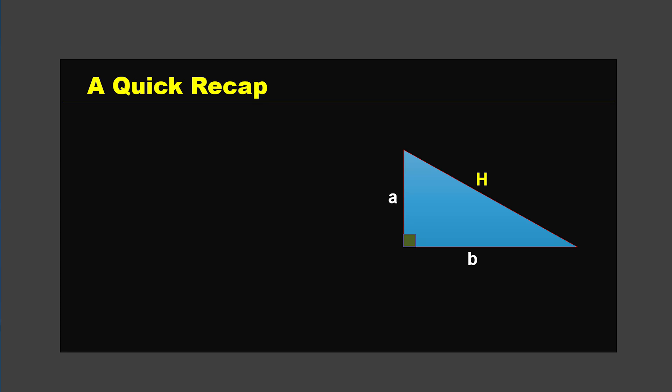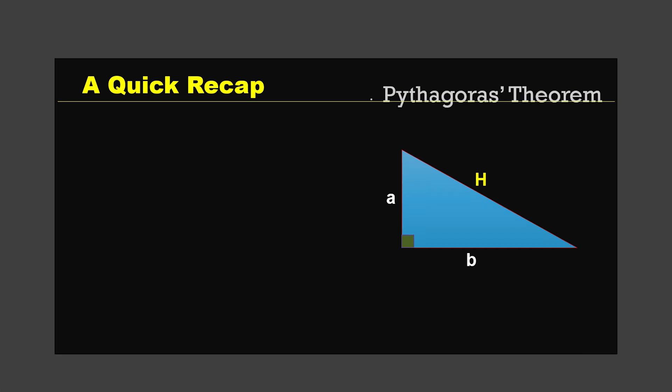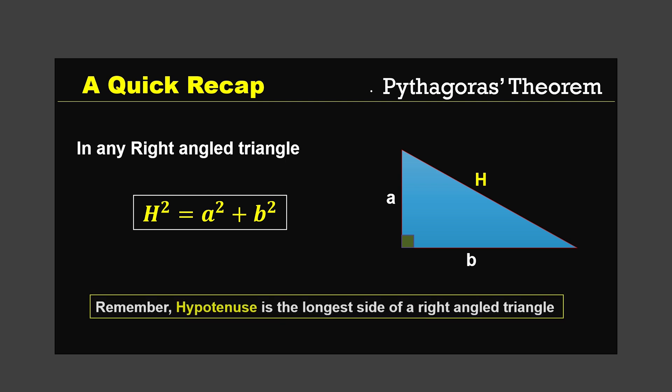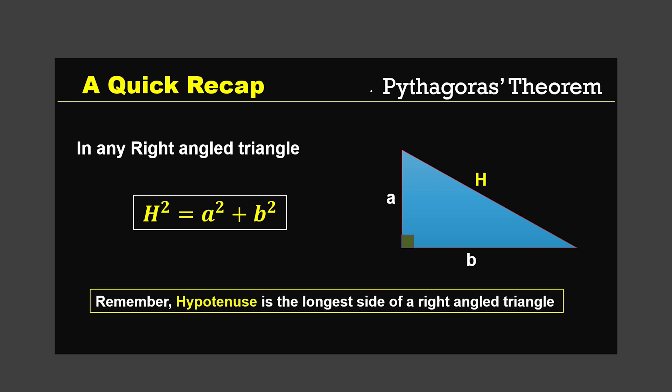Before we move on with the lesson, let's have a quick look at a couple of concepts related to right-angled triangles. Let's look at the Pythagorean theorem. In any right-angled triangle, the square of the hypotenuse is equal to the sum of squares of the other two sides. The hypotenuse is the longest side of the right-angled triangle. We use the Pythagorean theorem to find the missing side of any right-angled triangle — if two sides are given, the third side can be found.